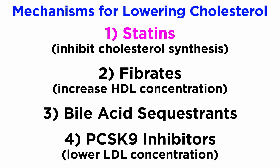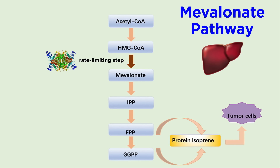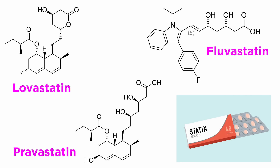Statins are the most common drug class used to lower cholesterol. The other classes of drugs are generally only utilized if statins prove to be insufficient at lowering a patient's cholesterol. Statins work by inhibiting the enzyme 3-hydroxy-3-methylglutaryl-coenzyme A reductase, abbreviated as HMG-CoA reductase. This enzyme catalyzes the rate-limiting step of the synthesis of cholesterol in the mevalonate pathway in the liver. Through the use of statins, cholesterol production is significantly inhibited, leaving less cholesterol available for transport by VLDL and LDL, in turn leading to less deposition in vital blood vessels and reduced risk of atherosclerosis. Drugs in the statin class are easy to recognize because they almost always end in the suffix "-statin" — for example, lovastatin, fluvastatin, and pravastatin.